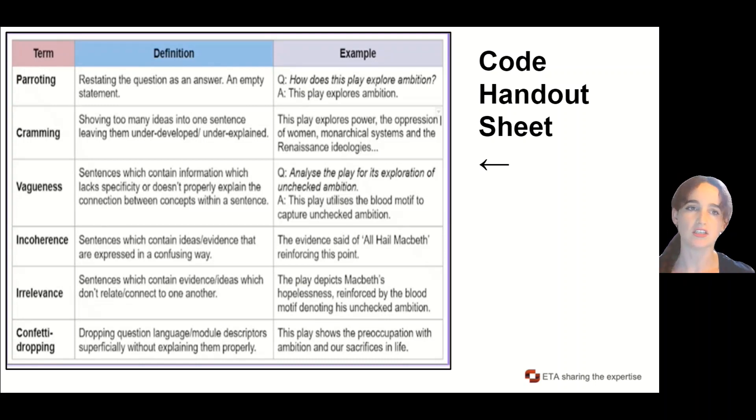If we go down to the bottom, we can also see irrelevance. A sentence is irrelevant if it does contain evidence and ideas which don't relate to or connect to one another. For an example, if we just look to the side, it says: the play depicts Macbeth's hopelessness reinforced by the blood motif denoting his unchecked ambition.